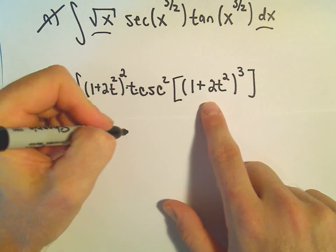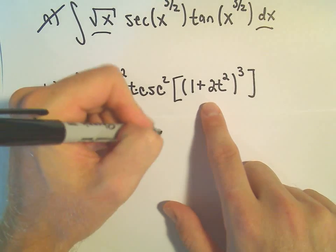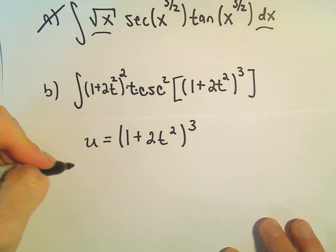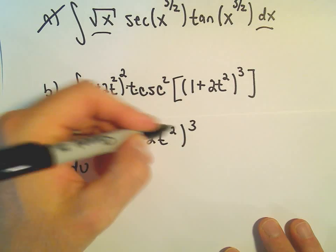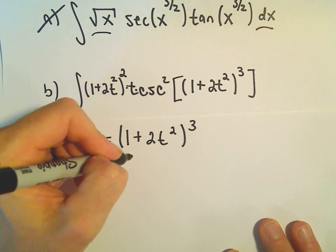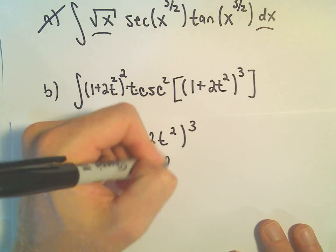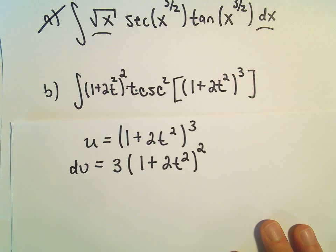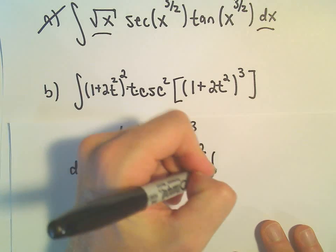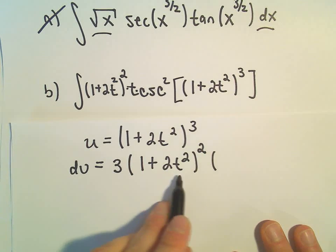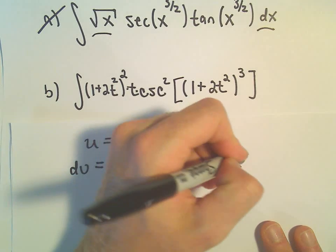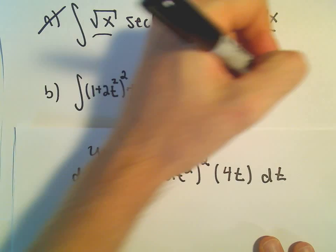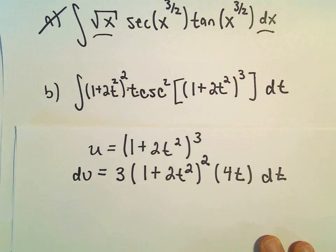So if I pick u to be (1 + 2t²)³, our du, we'd have to use the chain rule. So the 3 would come out front, then we would have (1 + 2t²)², we would have to take 1 from the exponent, and then we would multiply by the derivative of the inside, which would just be 4t, and then we would tack on our dt. I think I left off our dt in the original, so that should be on there.